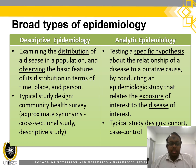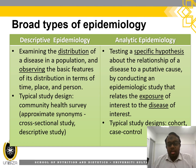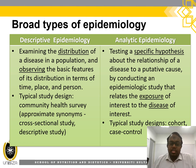There are two broad types of epidemiology. The first is descriptive epidemiology, which examines the distribution of a disease in a population and observes the basic features of its distribution in terms of time, place, and person. The typical study design is a community health survey — approximate synonyms are cross-sectional study or descriptive study. Analytic epidemiology tests a specific hypothesis about the relationship of a disease to a putative cause by conducting an epidemiology study that relates the exposure of interest to the disease of interest. Typical study designs are cohort (or prospective) and case-control studies.